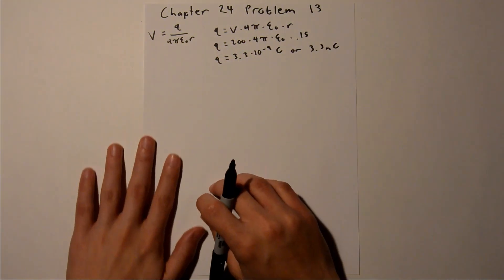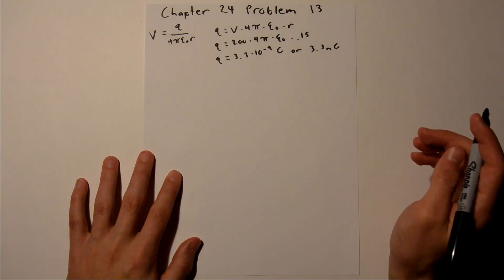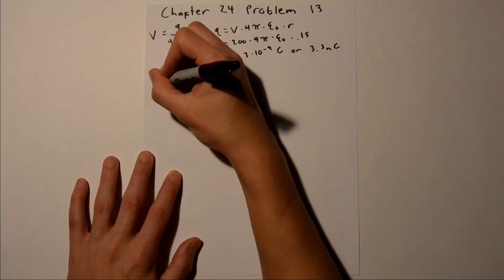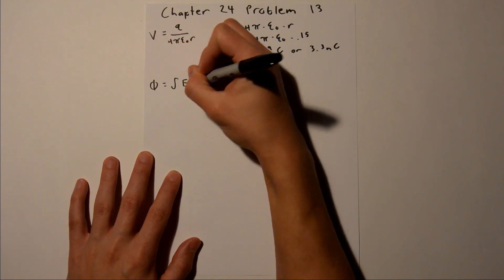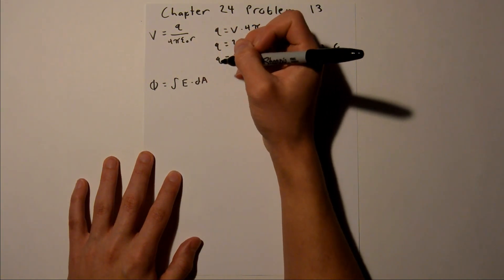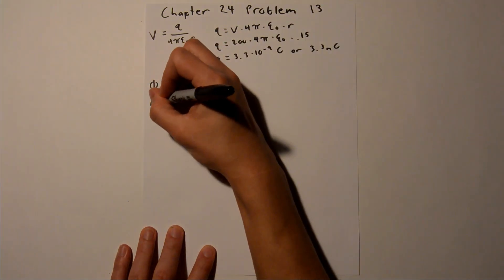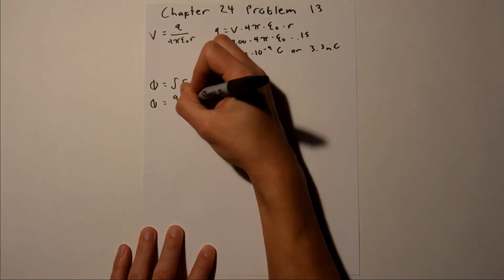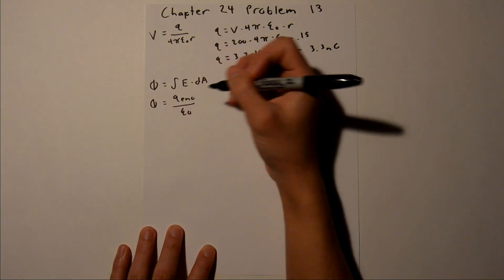Now for part b, to find the charge density, it is a little more involved. First off, we need to find the electric flux. So flux is equal to the integral of e dot dA, e being the electric field, and A the area in which the electric field passes through. And we also know that flux is equal to the charge enclosed over epsilon sub 0.